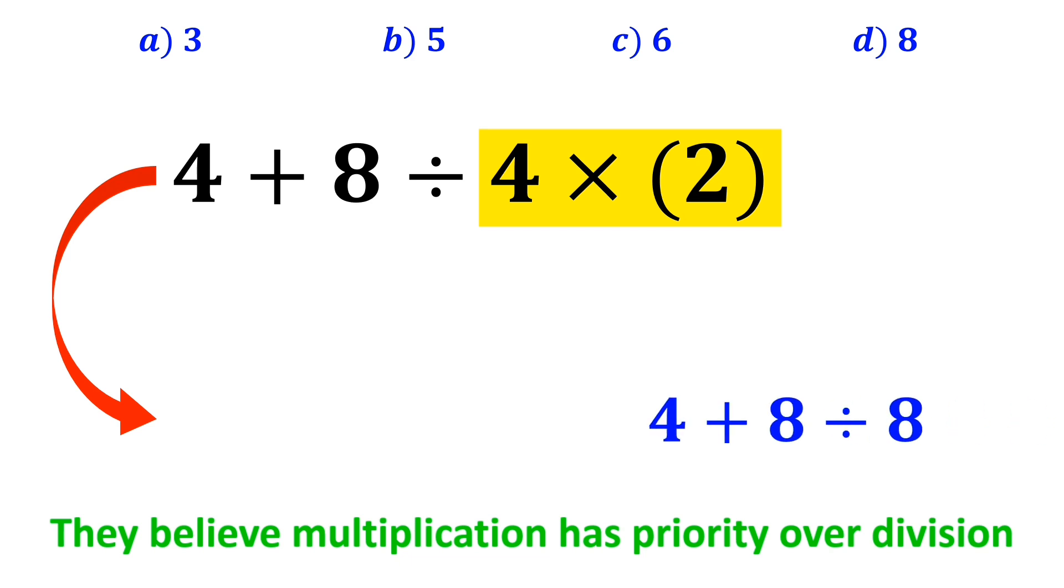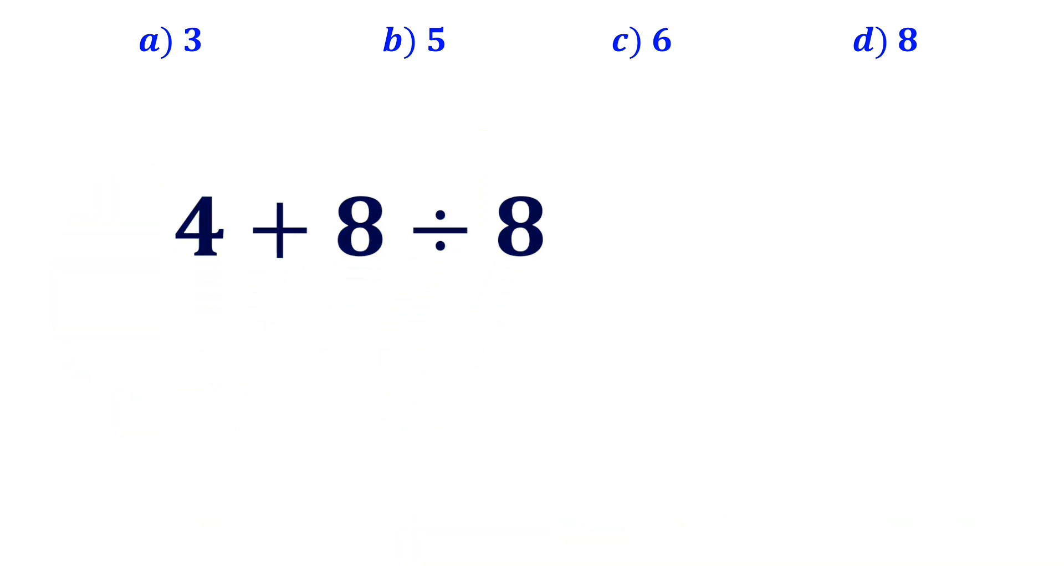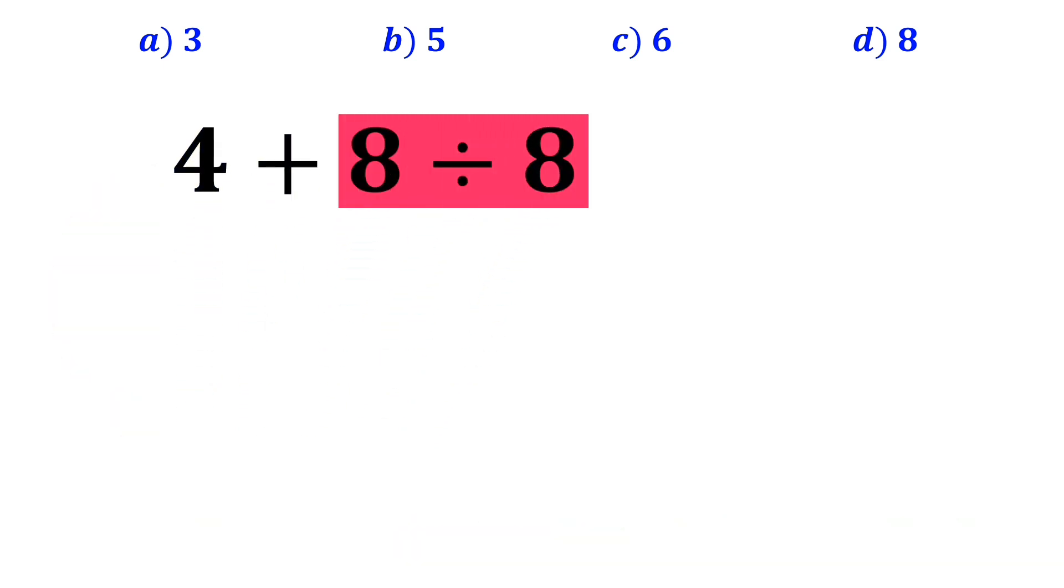So, this expression simplifies to 4 plus 8 divided by 8. Then, they go for the division between the two eights, because they think division has a higher priority than addition.